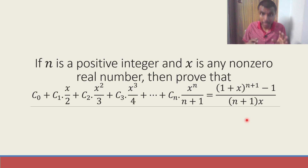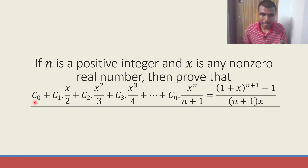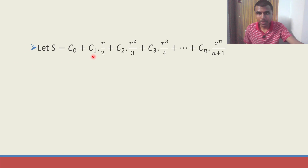I am going to go step by step, slow, and I will explain the logic also. So please stay with me. First, take this sum on the LHS and take it as S. So S equals C0 plus C1 into x by 2 plus C2 into x square by 3, and so on.